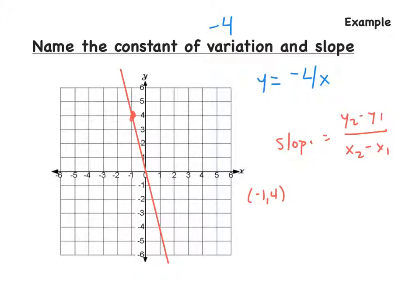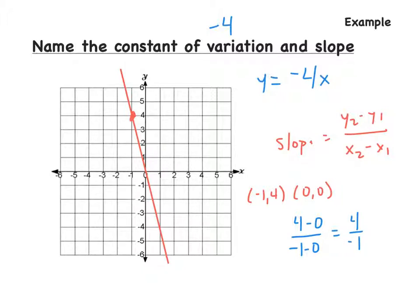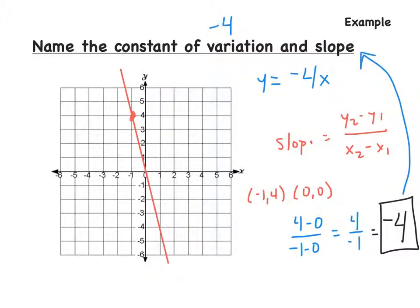So we have y2 minus y1 — let's set it up: 4 minus 0 over negative 1 minus 0. So 4 minus 0 is equal to 4, and negative 1 minus 0 is equal to negative 1. So our slope, if we simplify this, is going to equal negative 4. Our slope is also going to be negative 4.